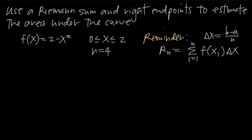We've been asked to use a Riemann sum with right endpoints to estimate the area under this function — specifically the area between this function and the x-axis over the interval x equals 0 to x equals 2. The fact that n equals 4 tells us we're going to be dividing this interval into 4 subintervals, and those will define our rectangles.